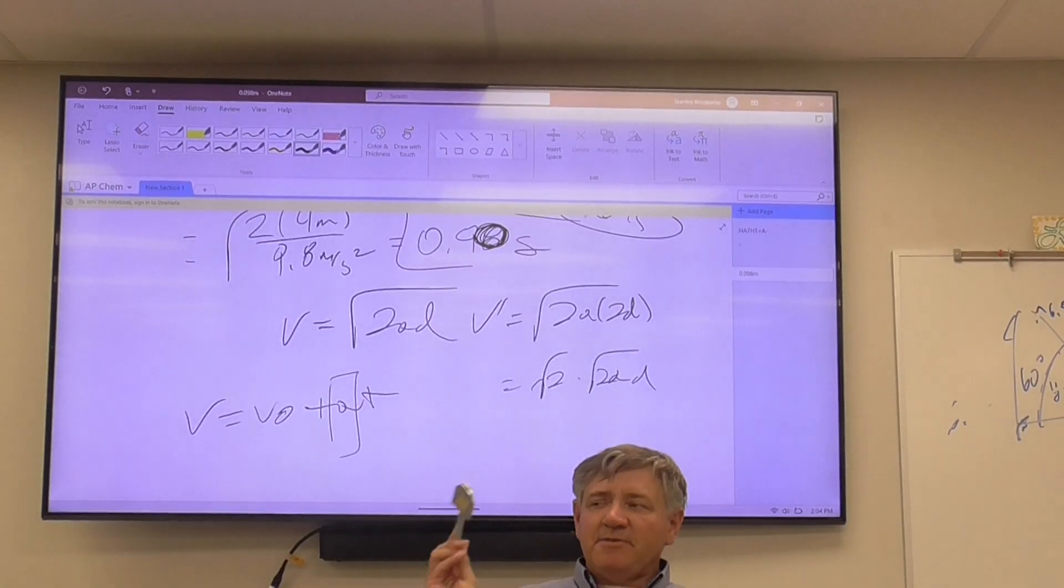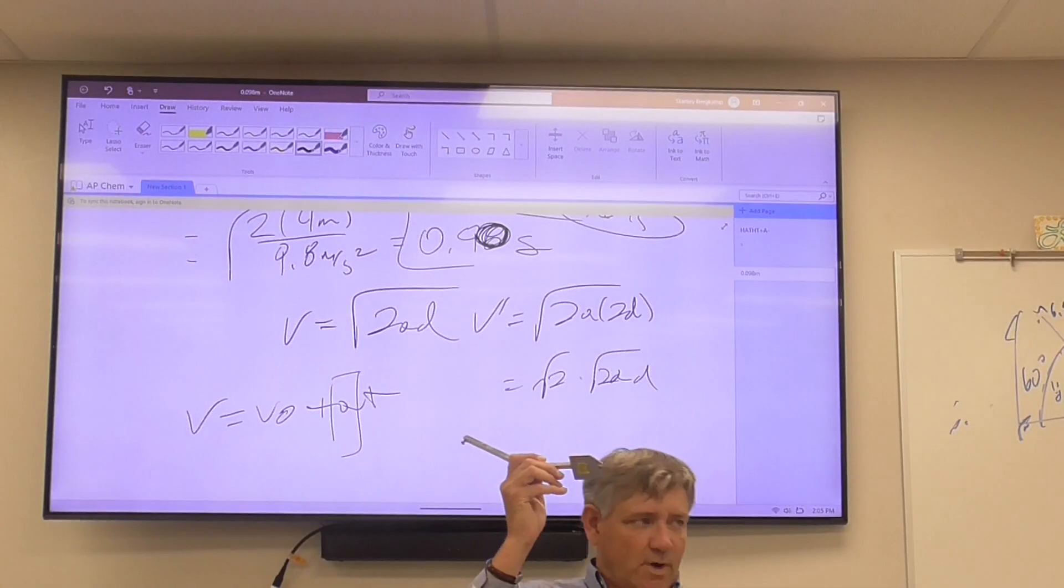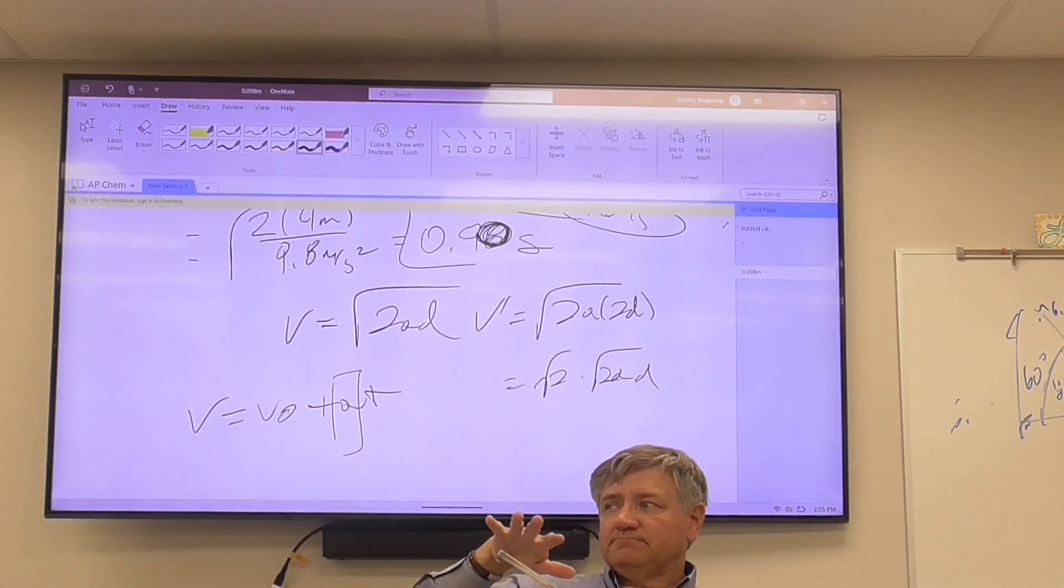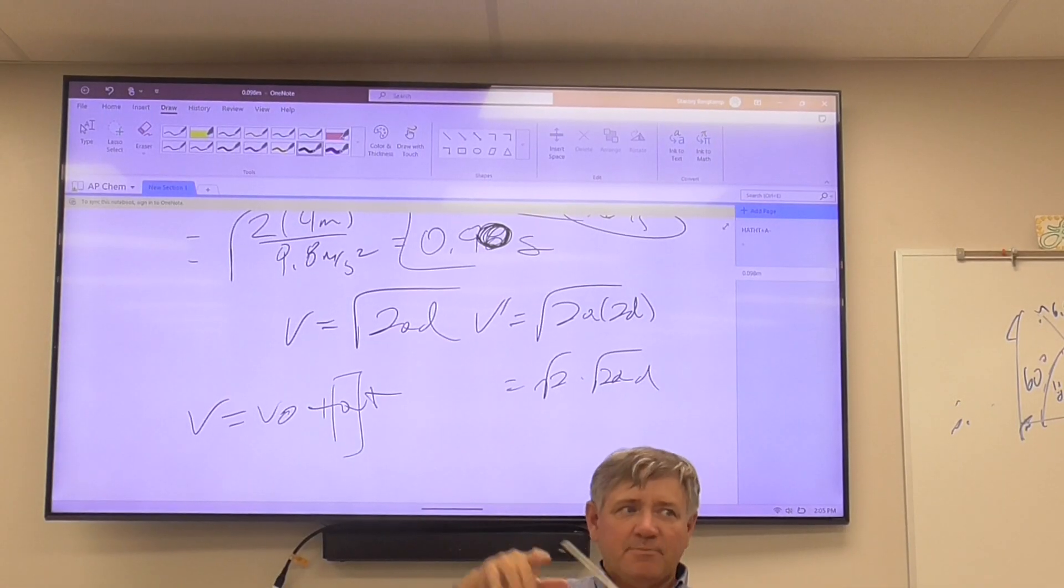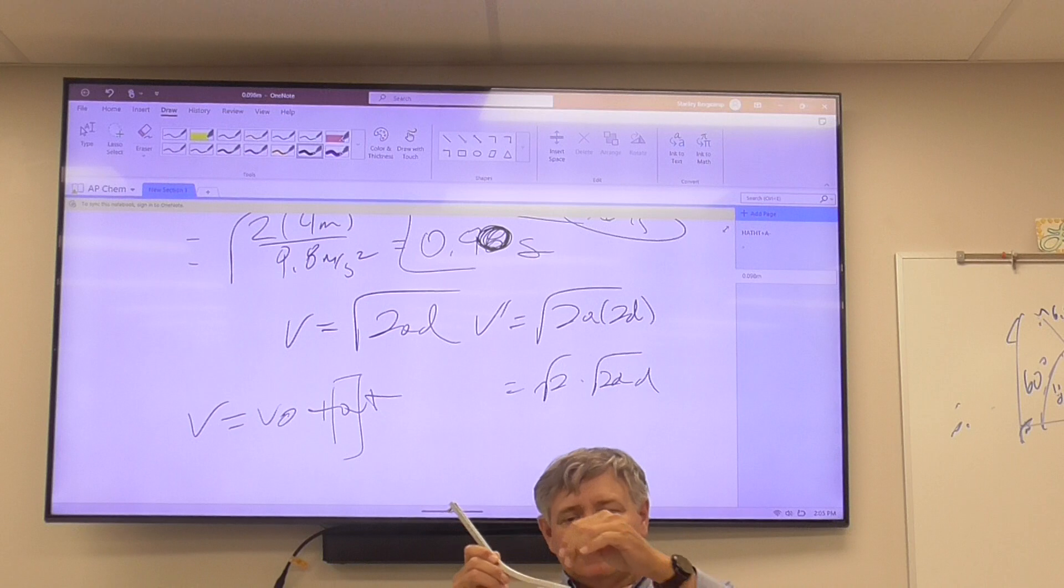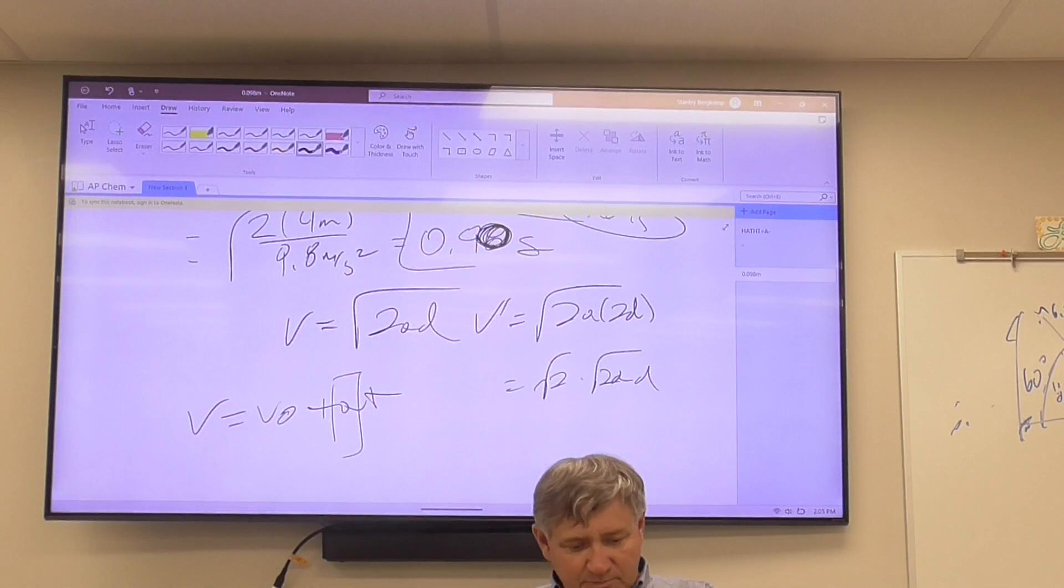In this lab, the only thing we're worrying about is the motion from when it leaves this ramp to when it hits the ground. The ramp motion, not part of the story, okay? Don't care about the ramp, all that's doing is converting potential energy into kinetic energy. So we're looking at it at that point where it leaves that ramp and turns into a projectile.